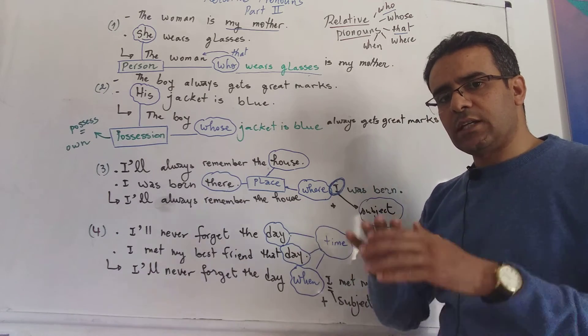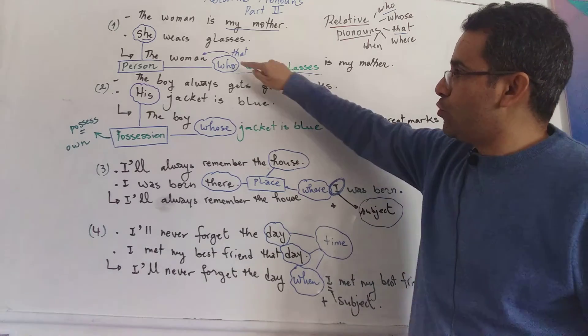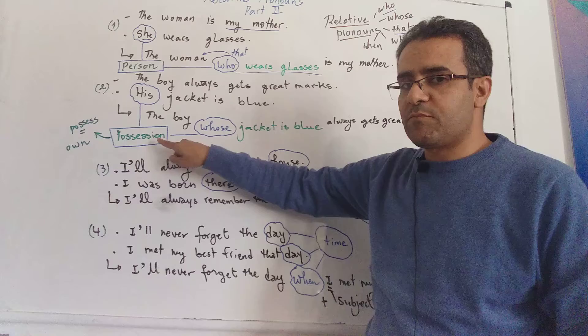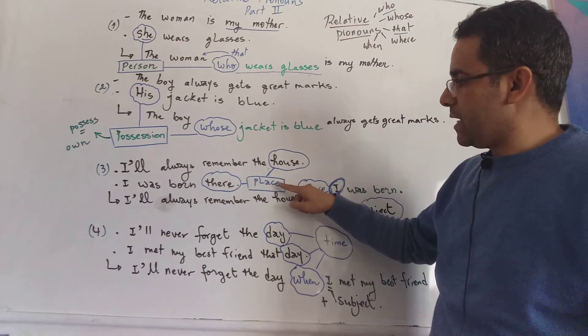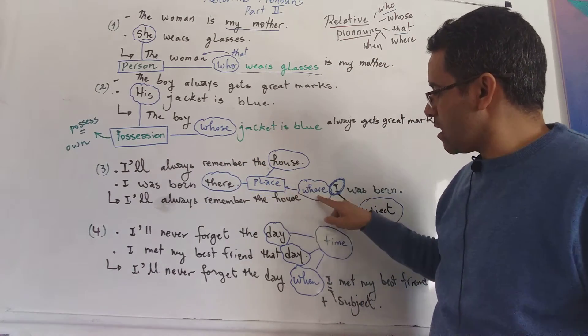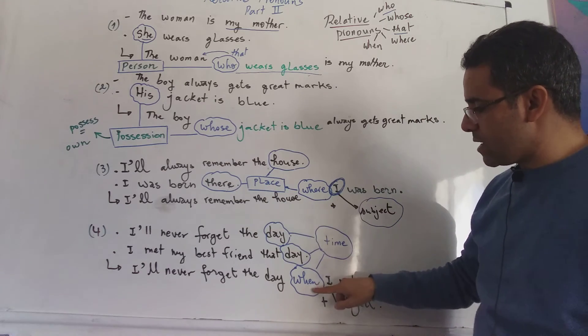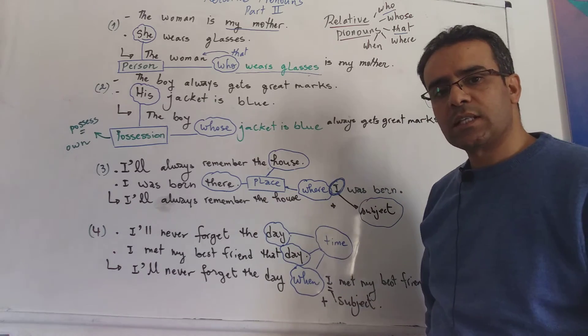So briefly and generally speaking, let's recap. Who, we use it when we have a person. Whose, when we have possession. Where, when we have a place. And when, when we talk about timing.